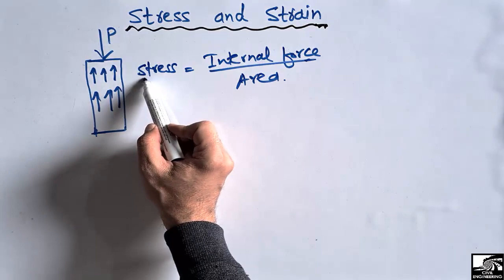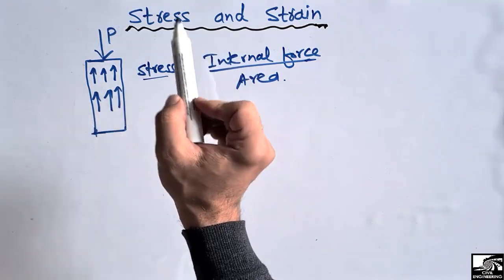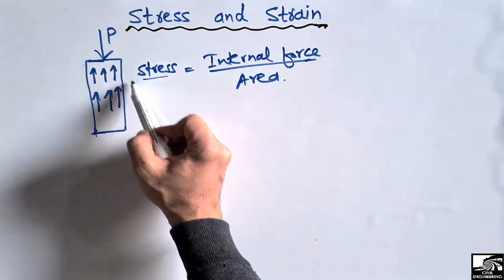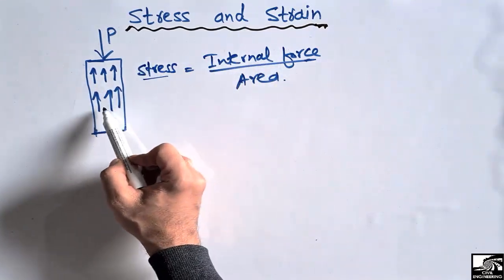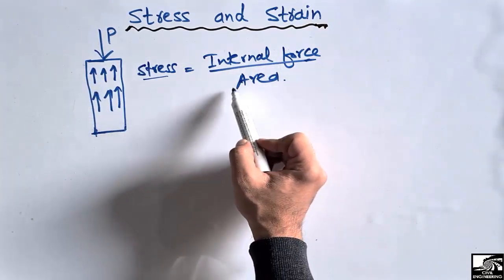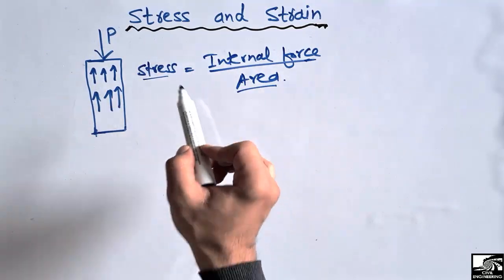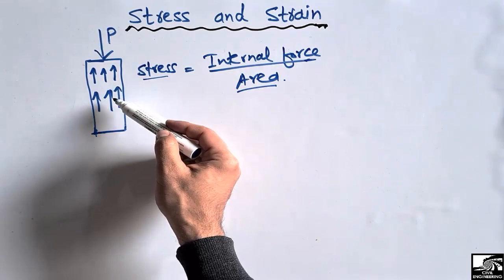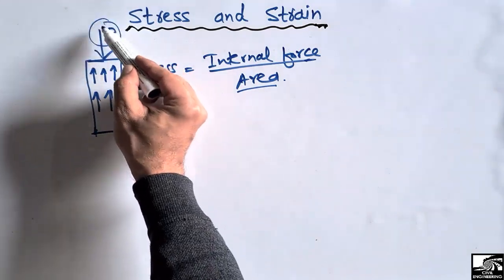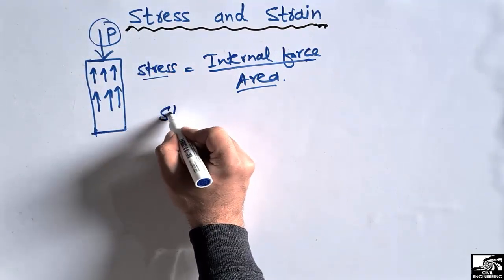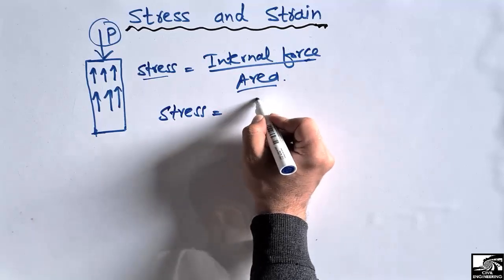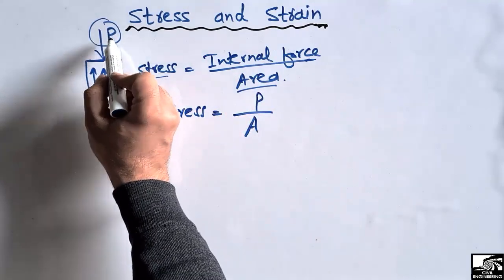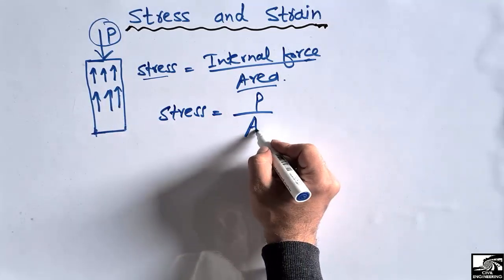Stress is different from pressure. Pressure is the external force divided by the area, while stress is the internal force created inside a body divided by the area. The internal force is basically due to the applied load P. That's why we say stress is equal to P divided by A, where P is the load acting on the column and A is the cross-sectional area.